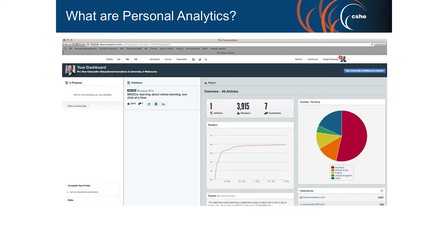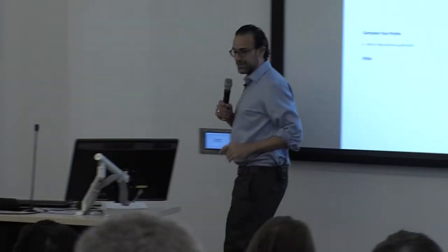This is my first attempt at writing a piece for The Conversation. This is my personal analytics dashboard, which is Klout-related. I was very excited sharing this with Jason Lodge, who has something like 40,000 readers. I was excited when I released this story on MOOCs and learning analytics — and then I stopped looking at about here, and decided I wouldn't log into my personal analytics dashboard for my writing on The Conversation.